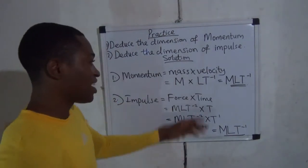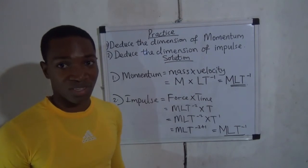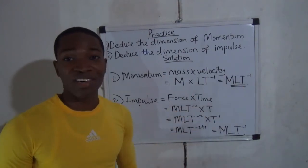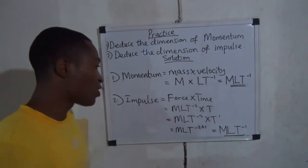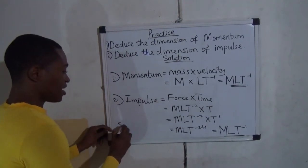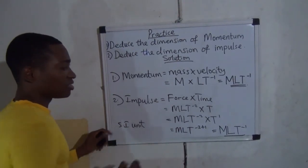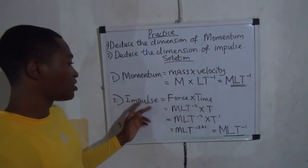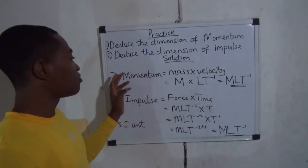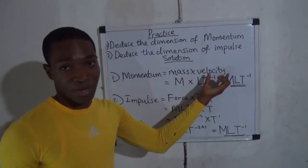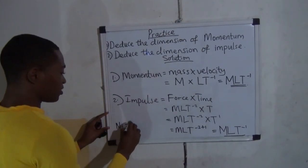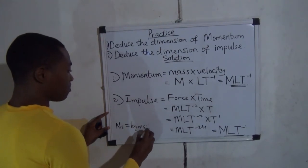Take note: the dimension of momentum is MLT to the power of minus one, and the dimension of impulse is also MLT to the power of minus one. That shows they have the same dimension, hence we can conclude that impulse and momentum have the same SI units. The SI unit of impulse is Newton second, and the SI unit of momentum is kilogram meter per second. That is how we conclude that Newton second equals kilogram meter per second.